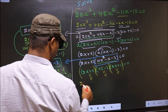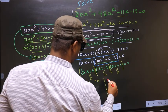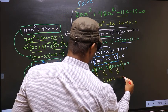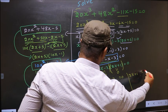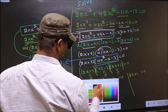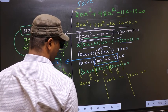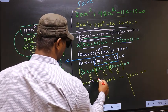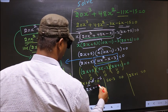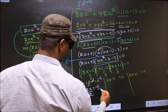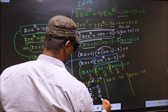That is: 2x + 5 = 0, 5x - 3 = 0, and 2x + 1 = 0. To get x from the first equation: subtract 5 to get 2x = -5, then divide by 2, giving x = -5/2.